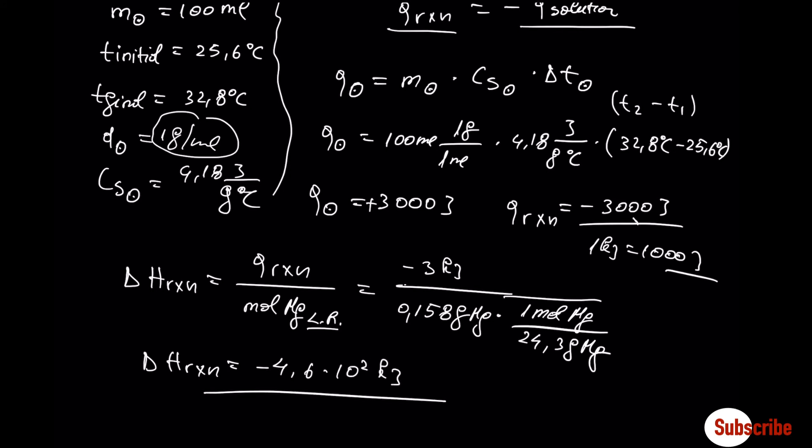The reaction is exothermic. To summarize: with the bomb calorimeter operating at constant volume we measure the change in internal energy; with the coffee cup calorimeter operating at constant pressure, we measure the change in enthalpy of a reaction.